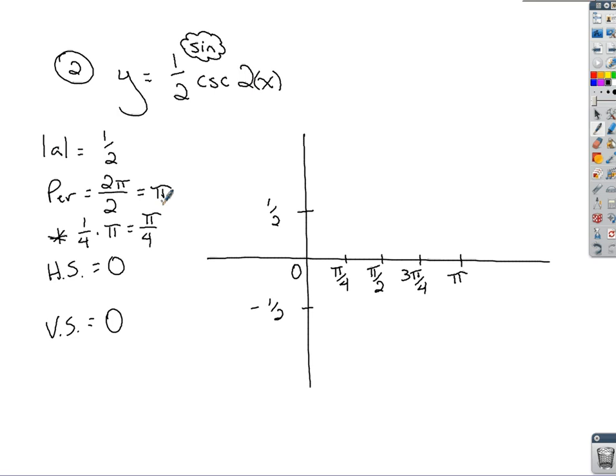So for graphing cosecant based on what we know about sine, if I fill in the sine portion of the curve as guidance. Start here at the origin, go up here to 1 half. Back to π over 2 at the axis. Bottom out here at 3π over 4. Back to the axis. This is not the actual graph we want, so I'm just keeping this real light as guidance.